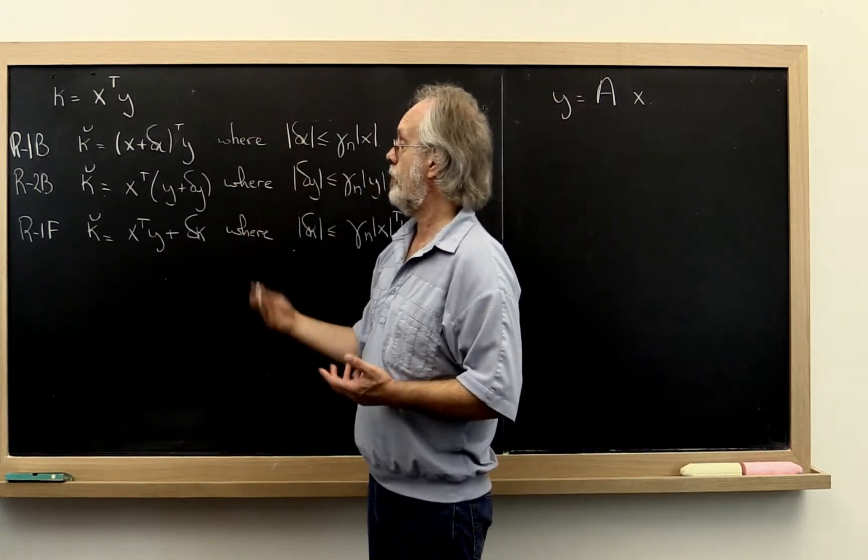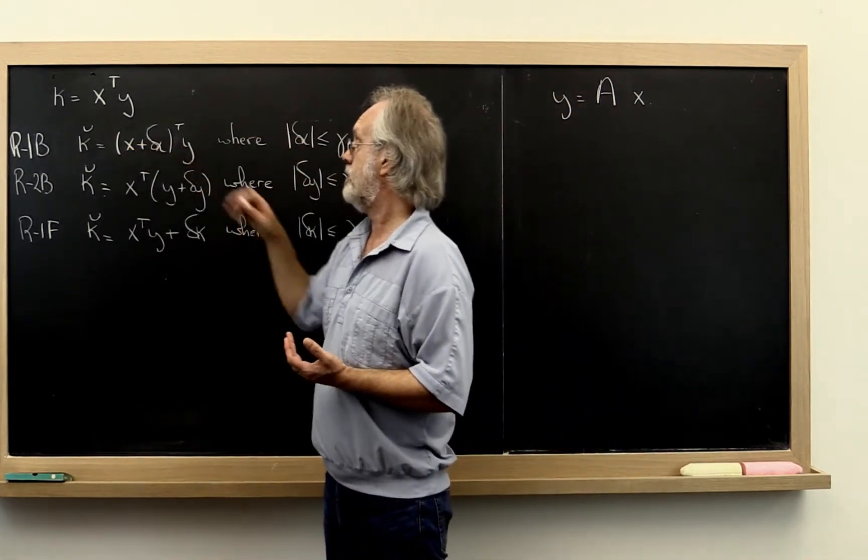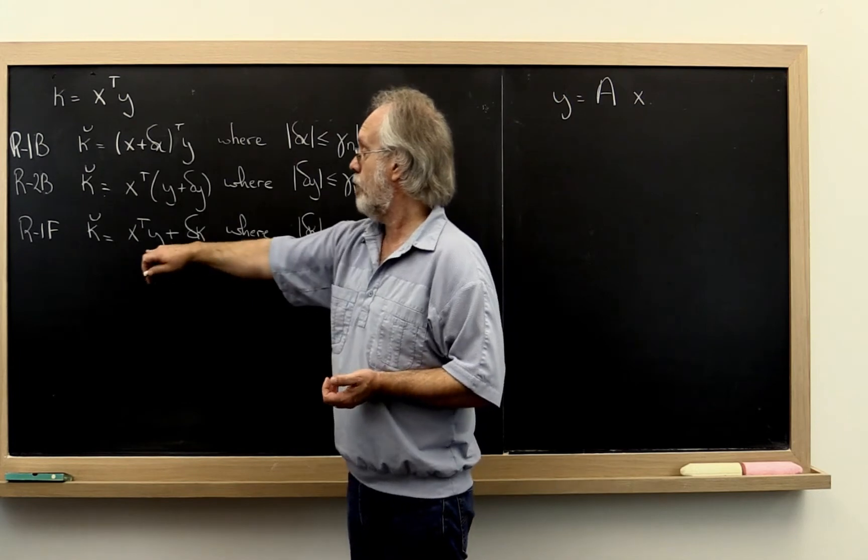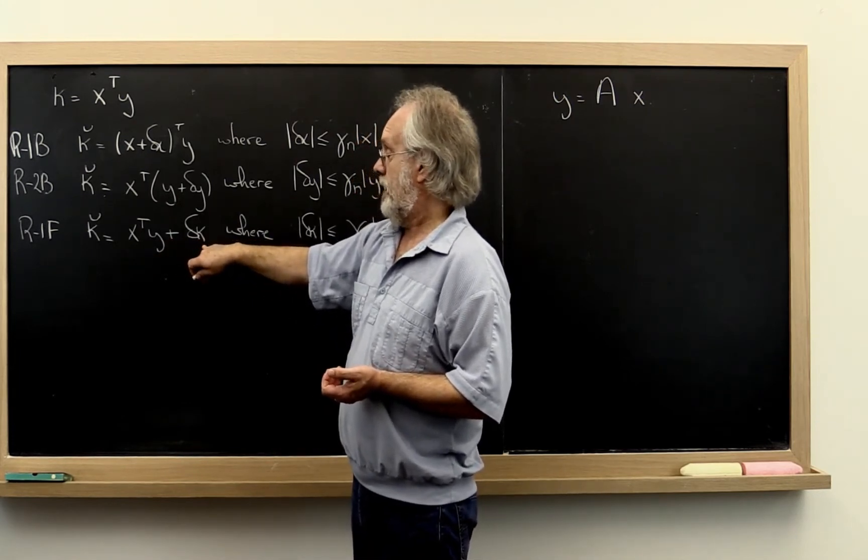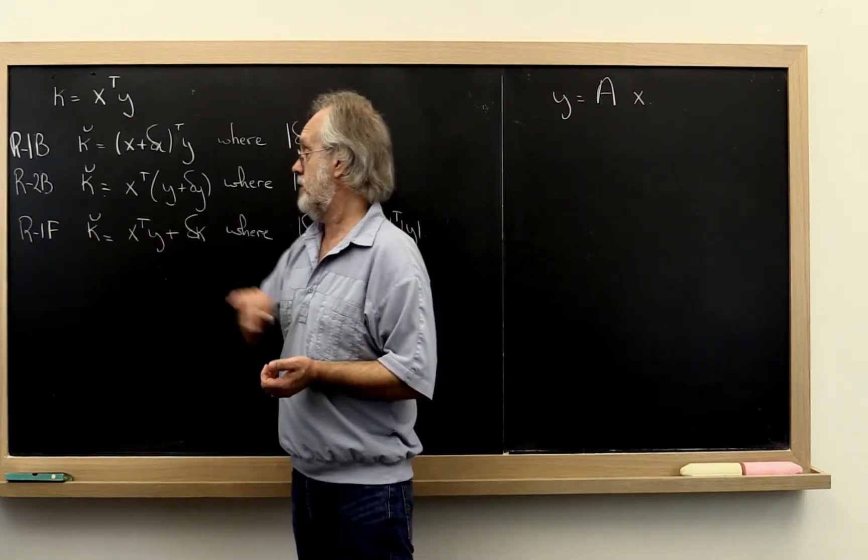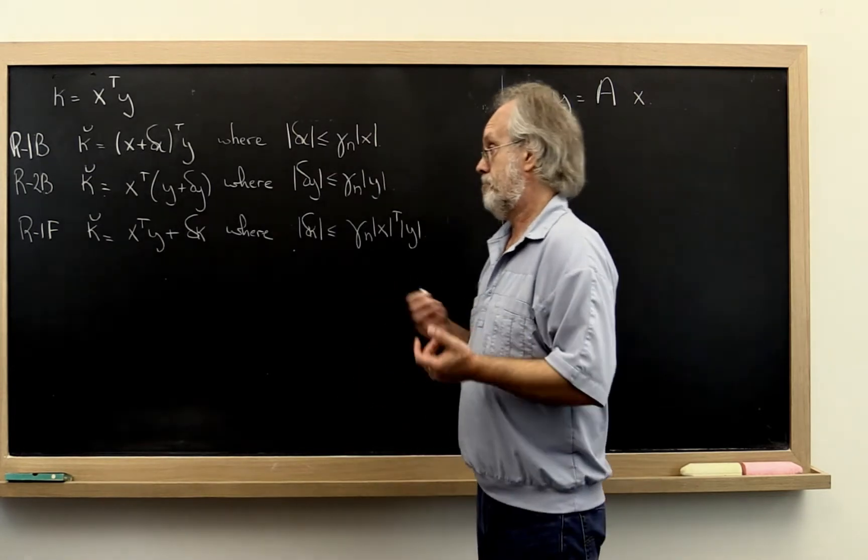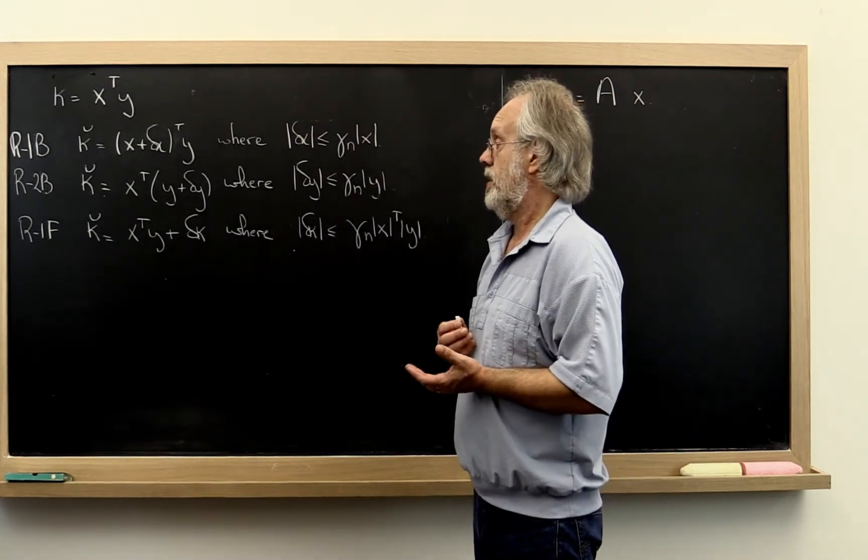The backward error results throw the error back at the vectors that are the inputs, and the forward result throws the error onto the resulting scalar that's computed, kappa.